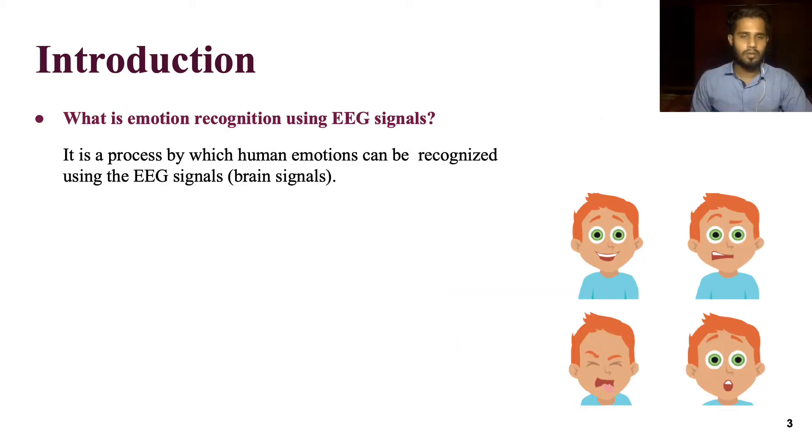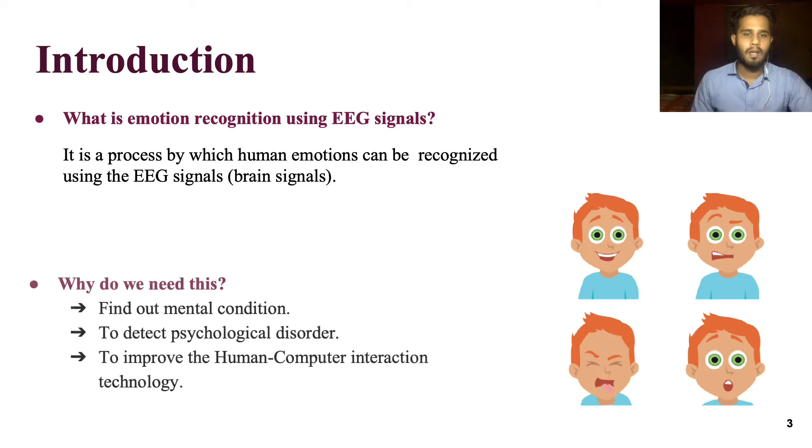What is emotion recognition using EEG signal? It means, with the help of EEG signal, identifying human emotions. It may be needed to observe the human mental states in different situations, find out psychological diseases, and for improving the accuracy of human-computer interaction automation technology.